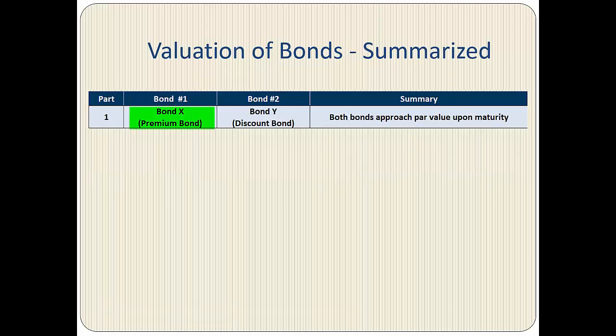In Part 1, we compared premium bond X to the discount bond Y and saw that when the yield to maturity is constant, the price of a premium bond declines over time and the price of a discount bond rises over time. At maturity, a bond reaches its par value.